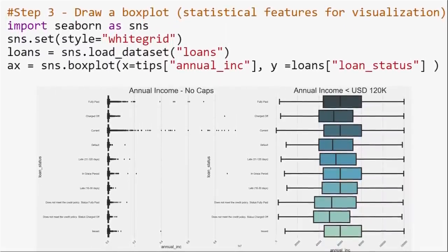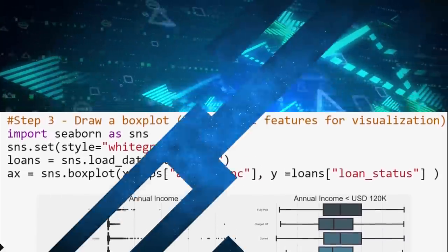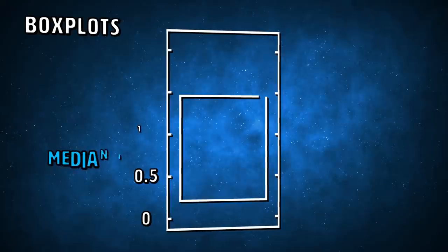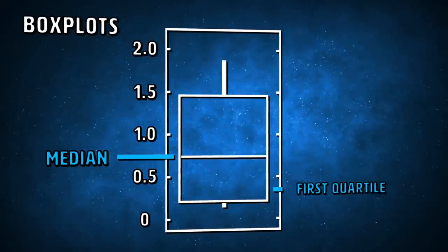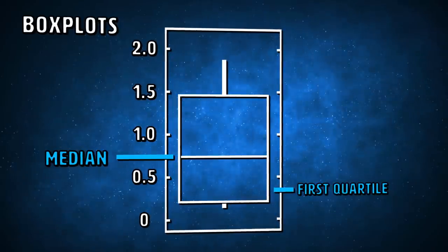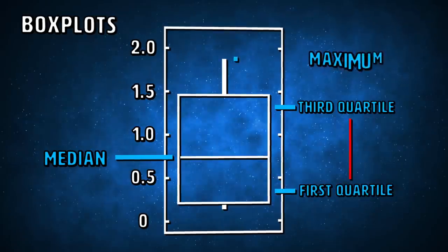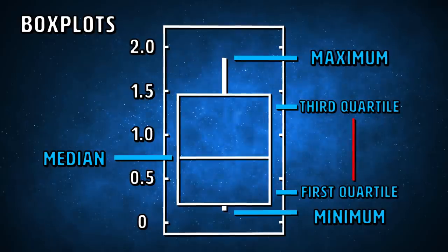Box plots are a standard way of displaying the distribution of data based on a few statistical features. We'll look at a subset from our data where income is less than $120k per year, since applications with income above this threshold are not statistically representative of our population — only 10% of the 880k loans have annual incomes higher than that. Without this cap we would have a lot of outliers and our box plot wouldn't look as insightful. The line in the middle is the median value. The first quartile is the 25th percentile and the third quartile is the 75th percentile. The max and min values represent the lower and upper ends of our data range.